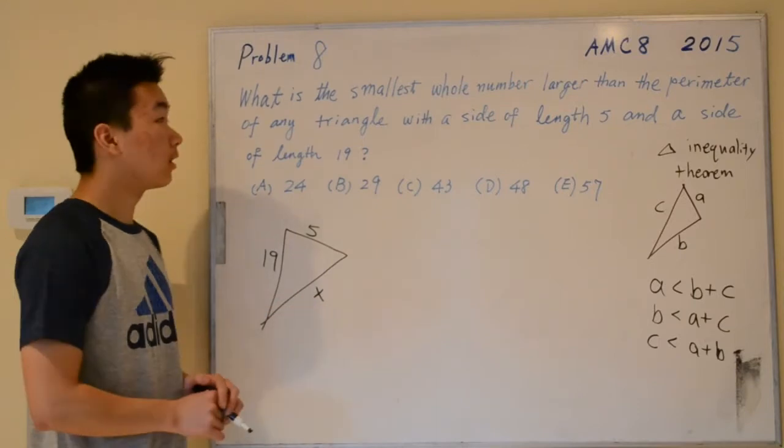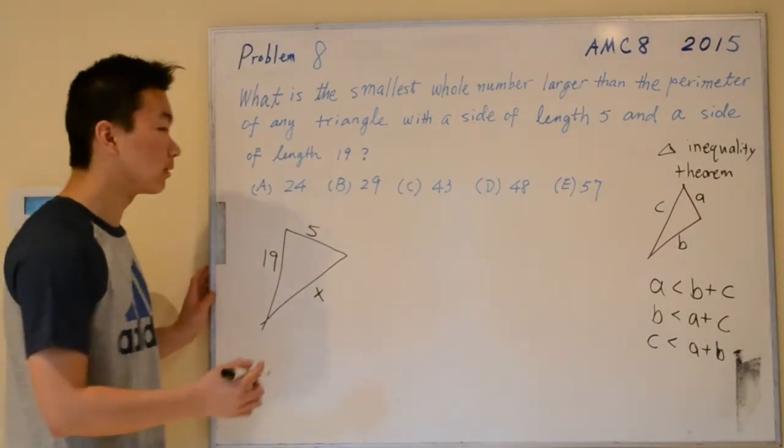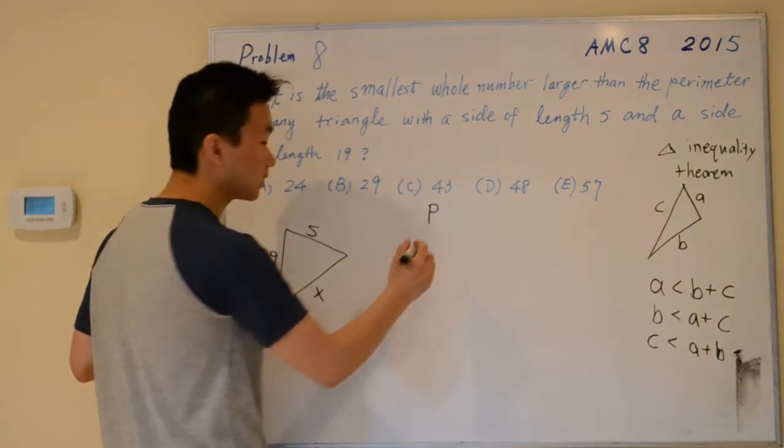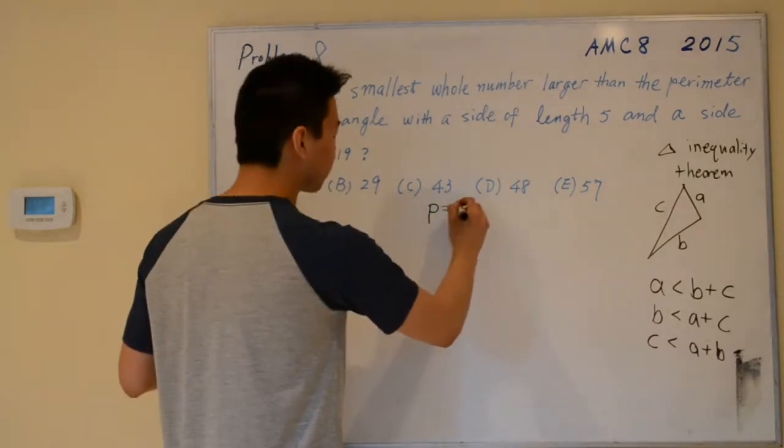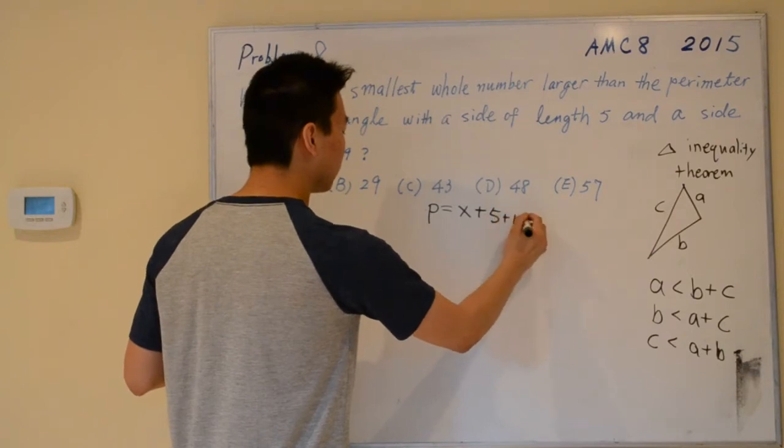Because we're searching for a number close to the perimeter, it might be useful to define the perimeter as a variable. Let's call that variable p, so p is equal to x plus 5 plus 19.